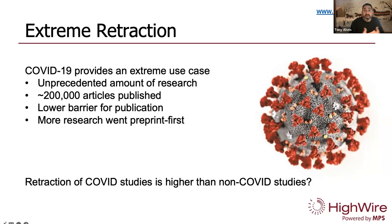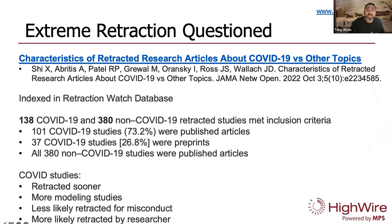The large volume of briskly produced research, the high stakes at the time, and the relaxed standards that some journals decided to implement temporarily made it more or less inevitable that a fair number of the papers would be retracted. There's a perception among many that the number of COVID-related retractions is much higher than non-COVID-related retractions. However, there's really not currently any evidence of this. Our friends at Retraction Watch have been looking into this question.